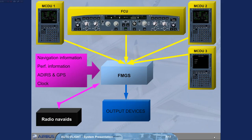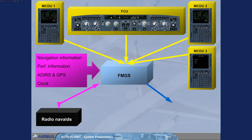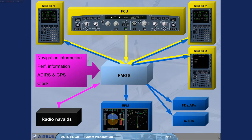The FMGS provides outputs to the Flight Directors (FDs) and Autopilots (APs) for pitch, roll, and yaw control, and to the Auto-Thrust for thrust control. It also provides outputs to the MCDUs and EFIS for the display of information, and to the navigation radios for the automatic tuning of radio aids.